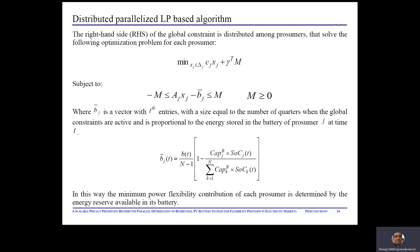As regards the distributed parallel linear programming-based optimization, the idea is that of distributing the right-hand side of the global constraint among all prosumers. Each prosumer solves the following optimization problem such that the minimum power flexibility contribution of each prosumer is determined by the energy reserve available in its battery according to the equation shown here. The update of the term gamma in the objective function is achieved in the virtual layer by a smart contract. The basic intuition is that we increase the weights by a larger amount on those constraints which are more violated.